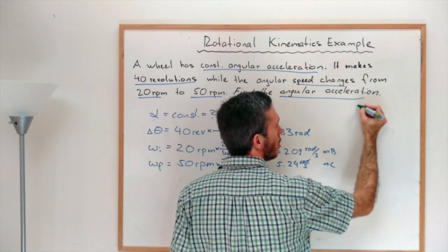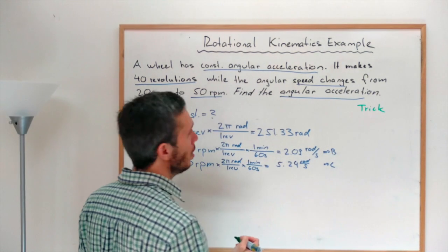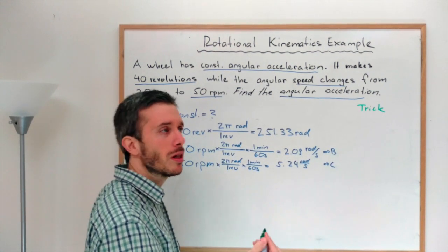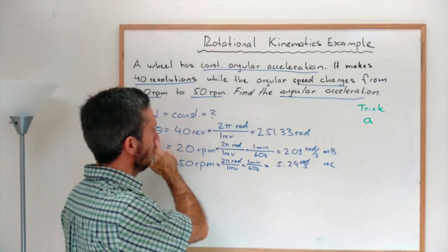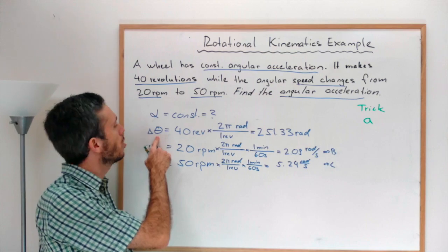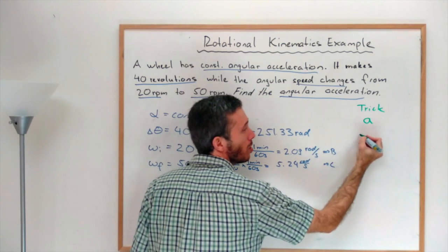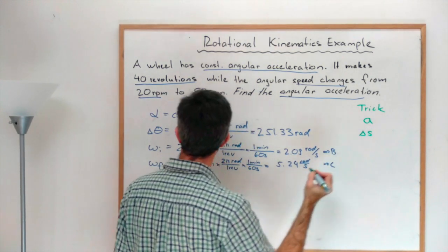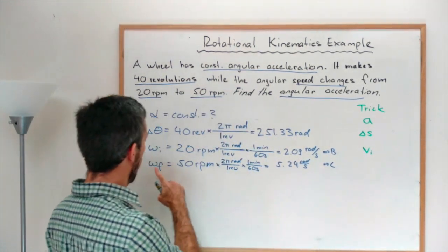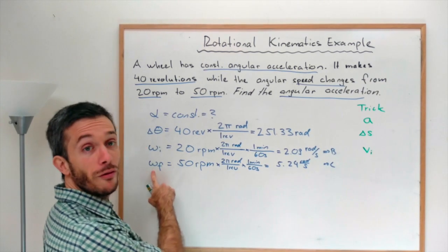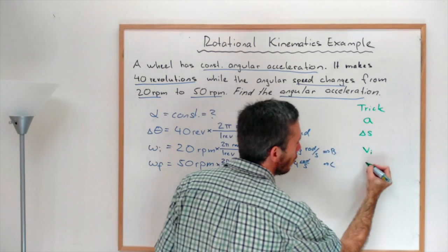So here comes the trick. Linear kinematics, what was the acceleration given in? It was given as A. What does the change in angle correspond to? It corresponds to the change in position. What does the initial speed represent? That's V initial. What does the final speed represent? That's V final.